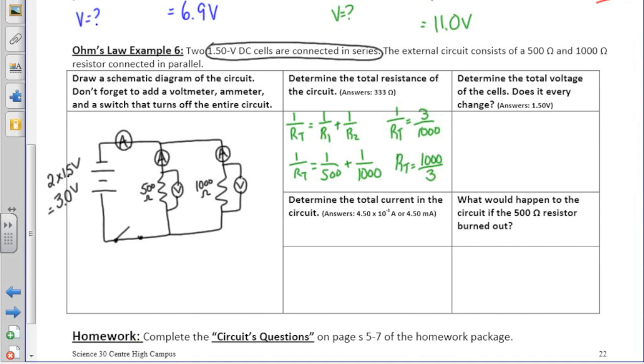If you don't end up with a fraction at this point, in order to find the reciprocal, you can always use the x to the negative 1 button on your calculator. If we divide 1,000 by 3, what we'll end up with is 333 ohms.